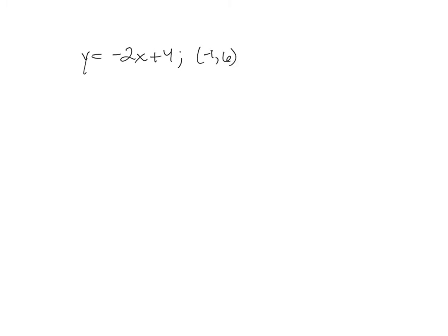Write the equation parallel. This line goes through that point, so we need the slope. In my problem, the answer is going to be negative 2x, and then I don't know because it has